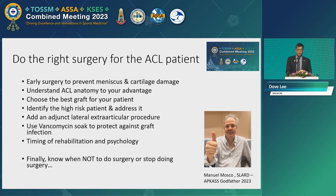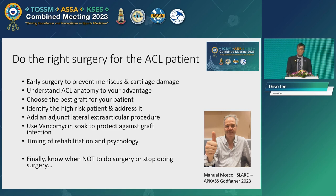In summary: do the right surgery for the ACL patient. Early surgery to prevent meniscus and cartilage damage. Understand the ACL anatomy as it evolves — the AM position protects the graft a bit more. You cannot try to recreate a perfect ACL reconstruction. Choose your best graft, identify the high-risk patient and address it — whether it's repairing the meniscus, adding an LET, or addressing the slope. I usually do an LET for about 70% of my patients. Use a vancomycin soak to protect against graft infection — it can bring the infection rate down to zero as most series have shown. Timing of rehabilitation and psychology is important, and people are working hard to improve return to sport rates beyond 65–70%.